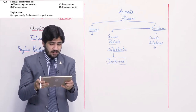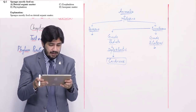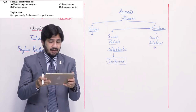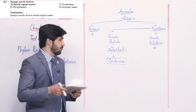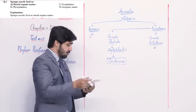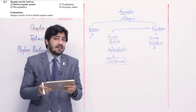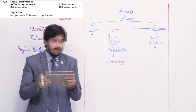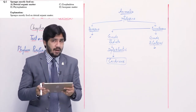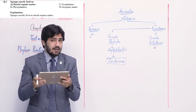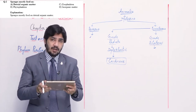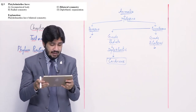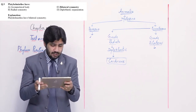Question number 2: sponges mostly feed on — alpha detrital organic matter, beta phytoplanktons, charlie zooplanktons, and delta inorganic material. Phylum Porifera's food depends 80% on detritus, so the right option is alpha — detrital organic matter. The remaining 20% food depends on phytoplanktons and zooplanktons.